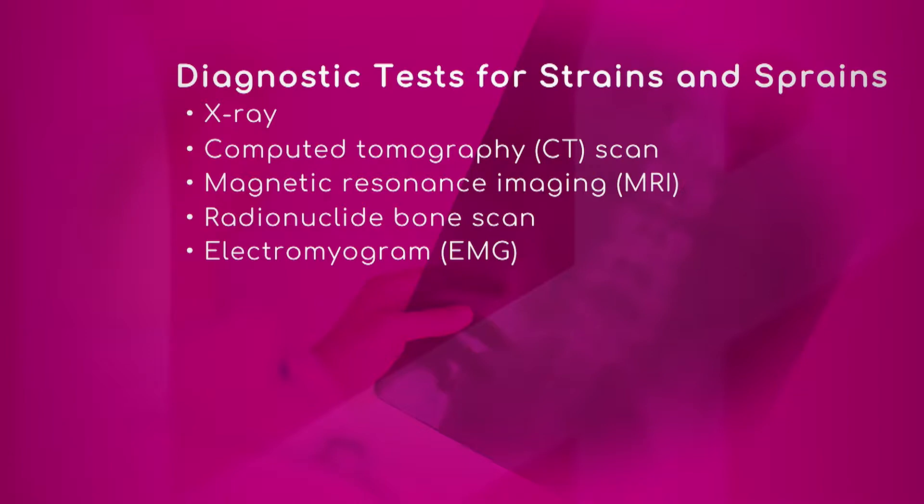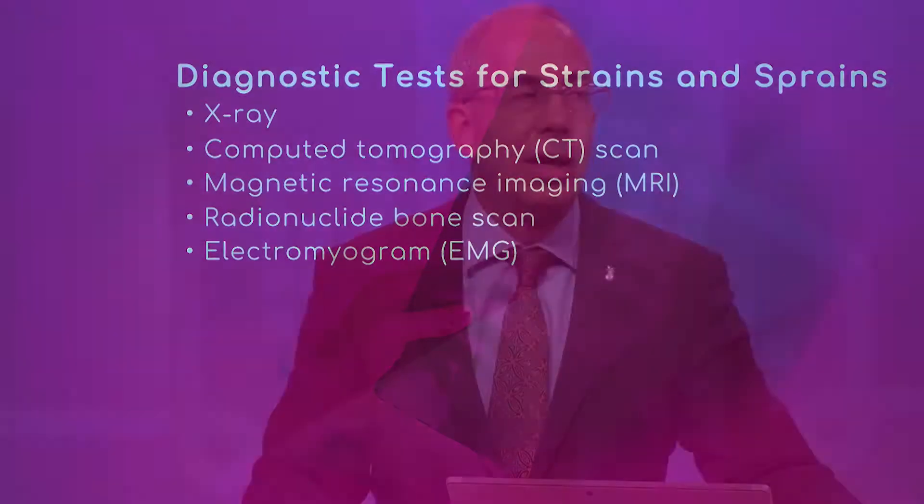The first one, X-ray, is very important to rule out fractures. X-rays show just a few things — they show fractures, so if you're involved in trauma, the first thing the emergency room or a physician would do is order an X-ray of the injured spine.